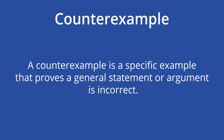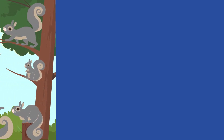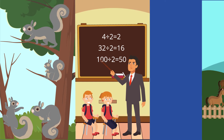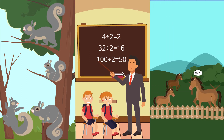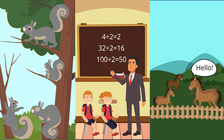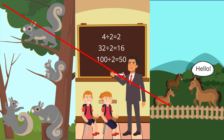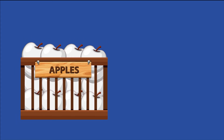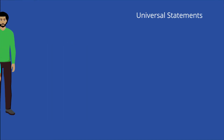A counter-example is a specific example that proves a general statement or argument is incorrect. Counter-examples are used as a logical device in a wide range of disciplines, including mathematics, philosophy, and public policy. A counter-example usually arises when one party in a debate or field poses a universal statement such as: all squirrels are grey, any even number is divisible by two, or no horses can talk.